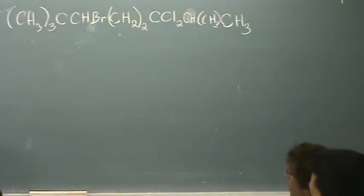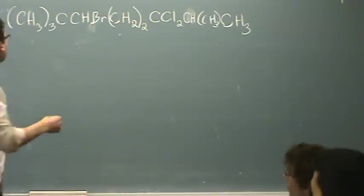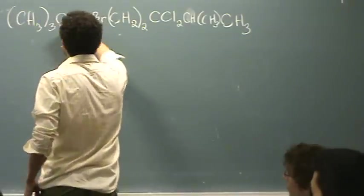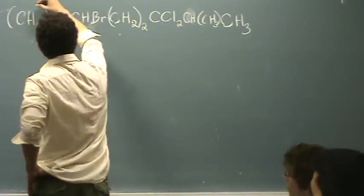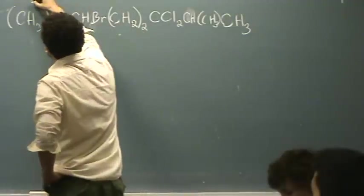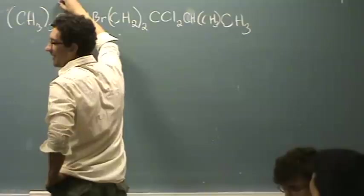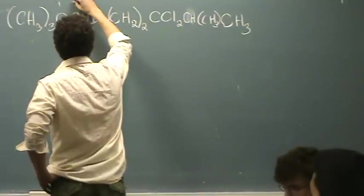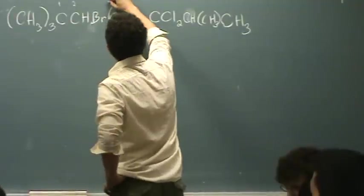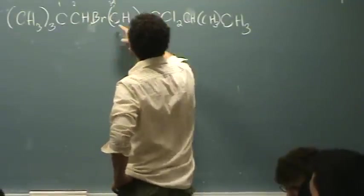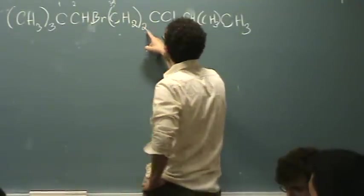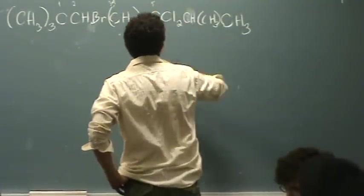Maybe one way if you're feeling confused about this is you can number the carbons. You've got these three of them, let's skip that for a second. I've got one here, another one there. There's two more here, so this is like three and four. See, because there's two of them in a row. Then you've got another one here, this is five.